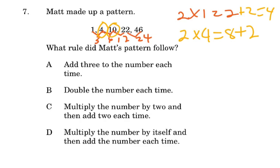Therefore, let us find one of the options that explain this rule. Add three to the number each time. No. Double the number each time. No. Multiply the number by two and then add two each time. Therefore, our answer is C.